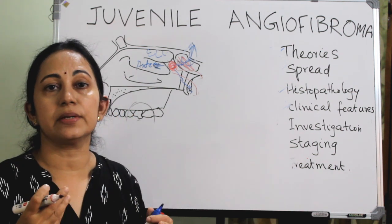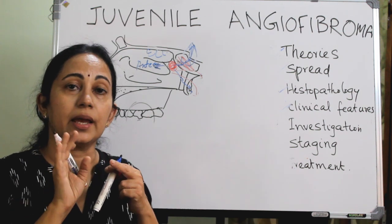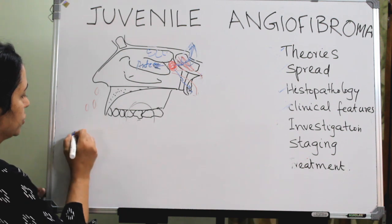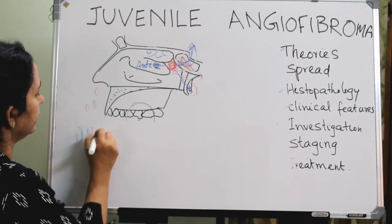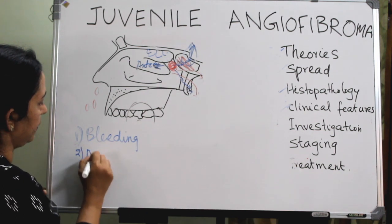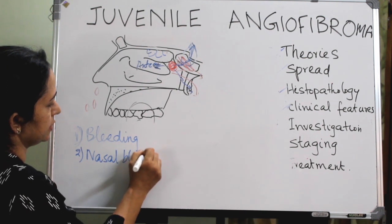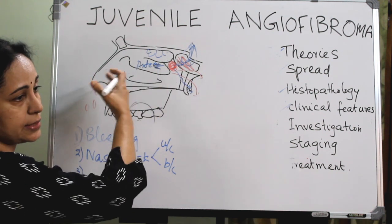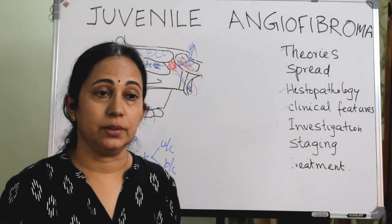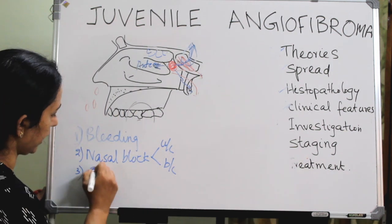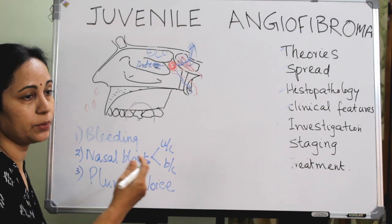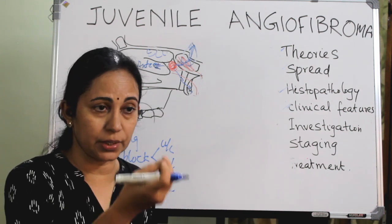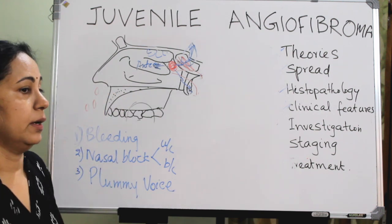Along with epistaxis, there is progressive nasal block — initially unilateral, then bilateral as the mass either blocks the choana or pushes the septum to the opposite side. Because the nasal airway is blocked, there is a nasal twang to the voice, characteristically producing a typical 'plummy voice.' As the mass enlarges, it can push the soft palate downward, causing a bulge or a visible mass hanging into the oropharynx from the nasopharynx.